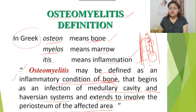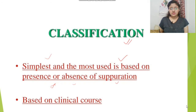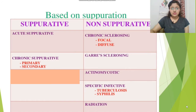Osteomyelitis also begins from the Haversian system and extends to involve the periosteum of the affected area. Infection comes through the bloodstream via the Haversian system and eventually involves the periosteum — that is, the covering of the bone. Now the classification: the simplest and most used classification is based on the presence or absence of suppuration — whether pus formation is present or not.